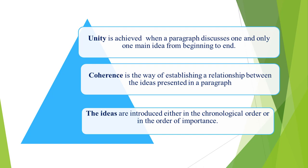The second part of unity is that every supporting sentence must directly explain or prove the main idea. For example, in a paragraph about the high cost of prescription drugs in the United States, you could mention buying drugs from pharmacies outside the United States as an alternative, but if you write several sentences about buying drugs outside the United States, you are getting off the topic and your paragraph will not have unity.